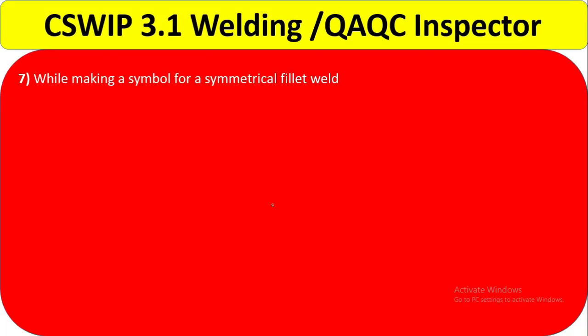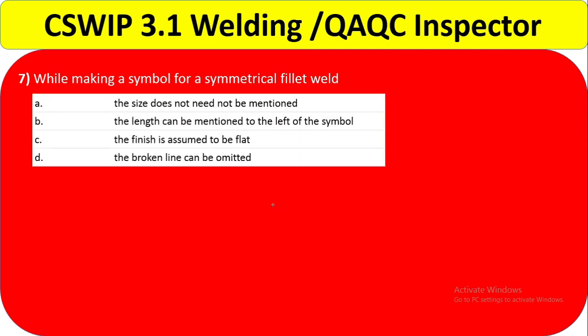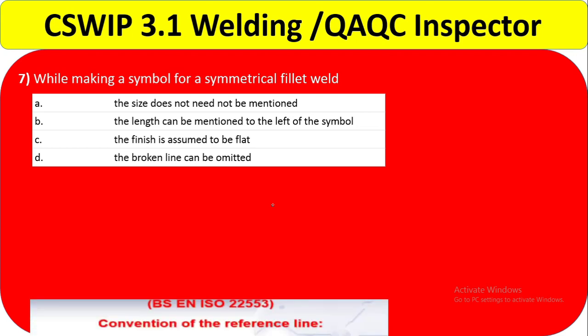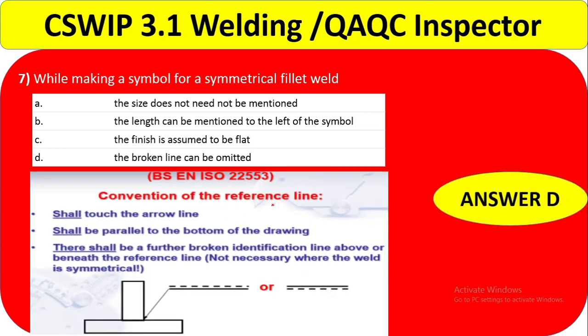Question number 7: while making a symbol for a symmetrical fillet weld, which is normally true? Option A — the size does not need to be mentioned — is not right; size should be mentioned. Option B — the length can be mentioned to the left of the symbol — left or right is not necessarily correct. Option C — the finish is assumed to be flat — is not correct. Option D — the broken line can be omitted — is the correct answer. For a symmetrical fillet weld, the broken line can be omitted.